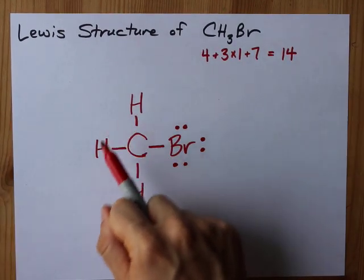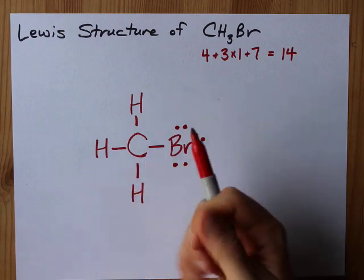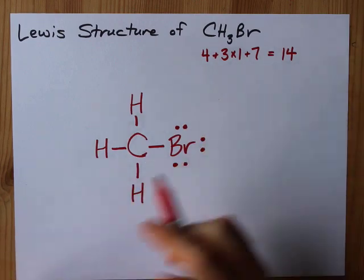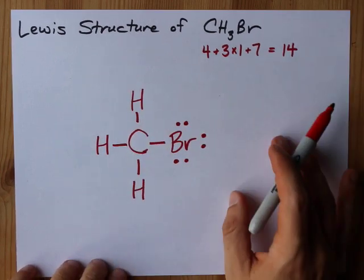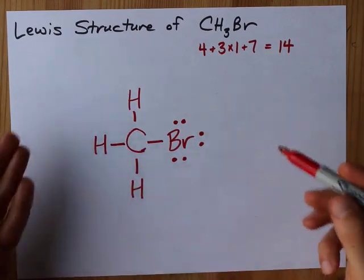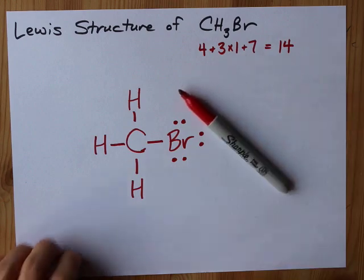Carbon has 8. It has 4 single bonds, and each of the bonds has 2. That's 8 as well. That's awesome. Hydrogen is happy with single bonds. Not a follower of the octet rule. This is it. This is my Lewis structure for bromomethane.